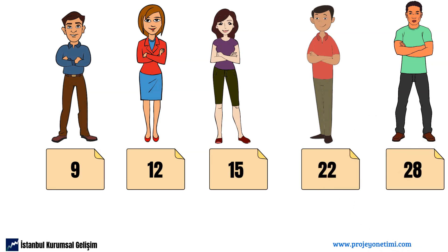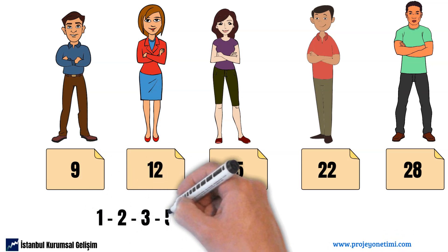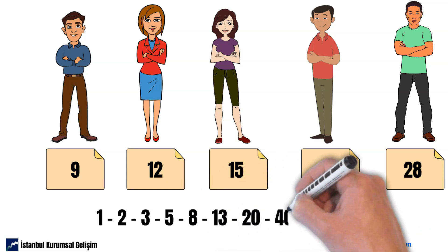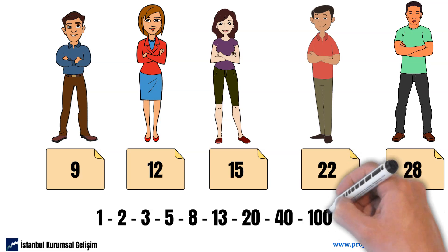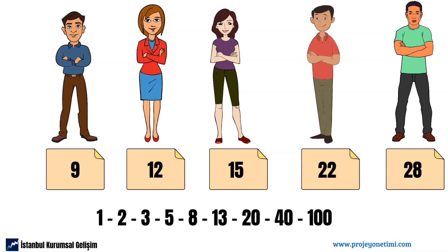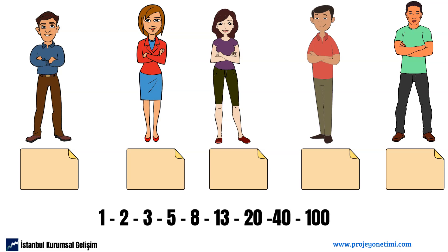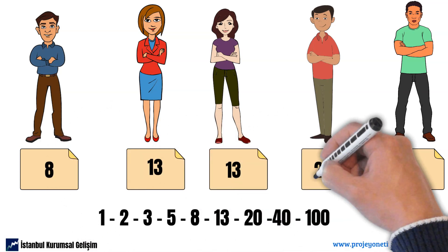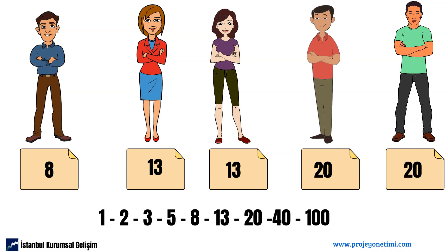The Scrum Master asks team members to revise these numbers in accordance with the planning poker number sequence: 1, 2, 3, 5, 8, 13, 20, 40, 100. The aim here is to categorize and place the estimates that are close to each other on a similar scale. Thus, the estimates given are revised to 8, 13, 13, 20, and 20.